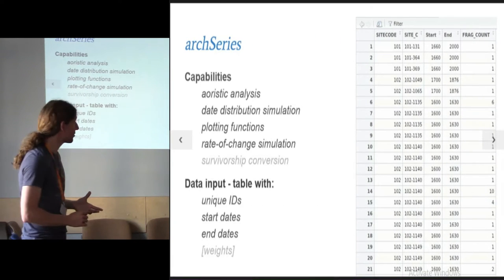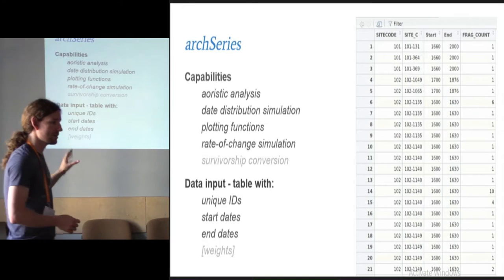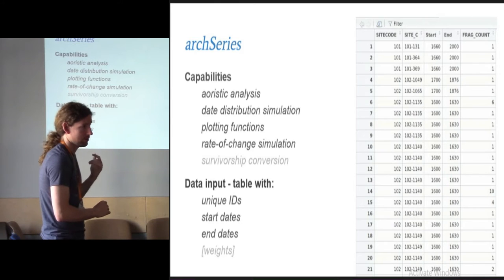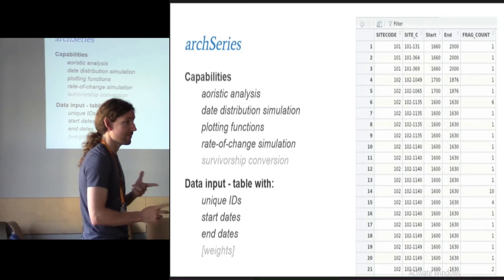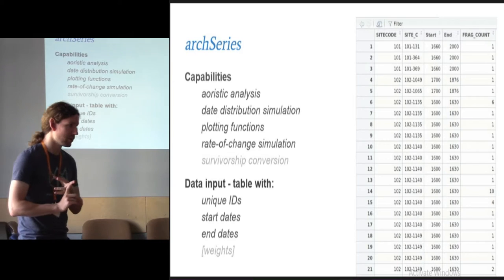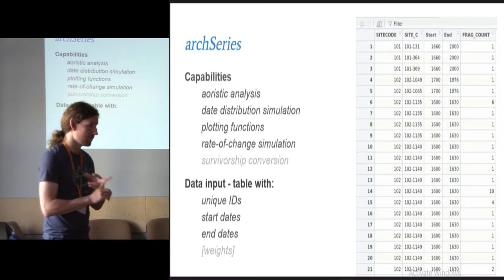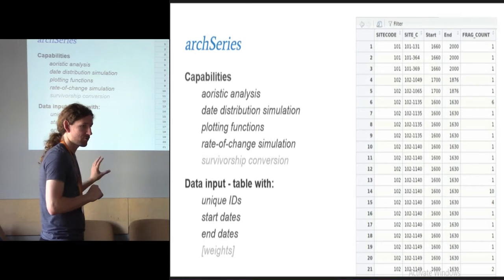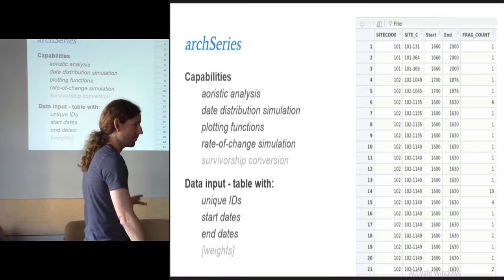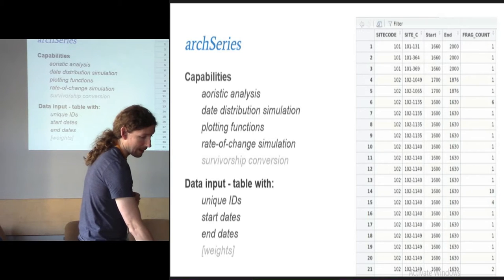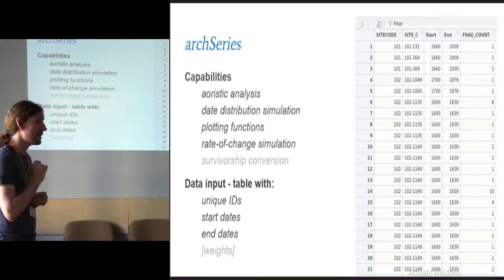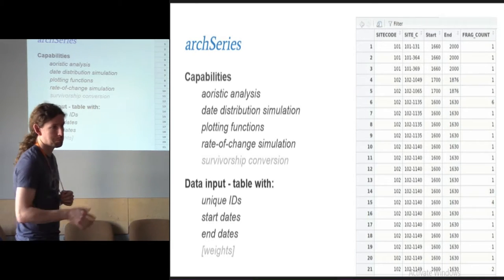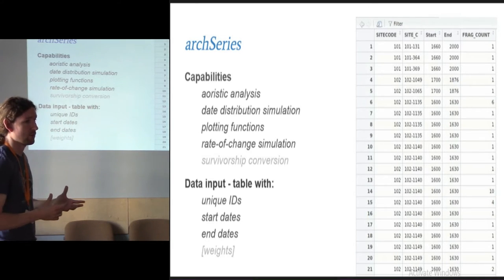What I've done is built a package for dealing with these two situations. It can do aoristic analysis. It can do date distribution simulations with some extra functions that go along with that. And it has a series of plotting functions using R's base plotting platform, but customizing within that. And it also does rate of change simulations, which I'll explain what I mean by that later on. But the important point here is that the data input is extremely simple. All you need to feed into it is a table.